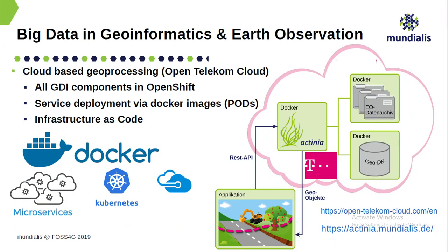Now talking about the cloud — we had the more detailed talk about this yesterday. We are using the Open Telecom Cloud, and meanwhile also the internal Telecom Cloud. It is based on OpenShift. We are using Docker images running in so-called pods. The entire idea is to run infrastructure as code — you have everything scripted, and from there you can launch the entire machine. You basically have GRASS in a Docker container, available on Docker Hub — GRASS with PDAL and Python 3.